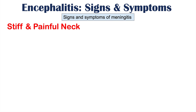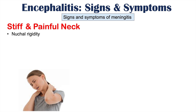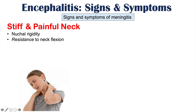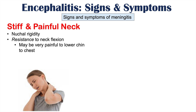One sign that occurs if the meninges are involved is stiff and painful neck, also known as nuchal rigidity — a resistance to neck flexion. If the clinician tries to passively flex the patient's neck, it becomes very difficult. The brain and spinal cord are both surrounded by meninges, and if inflamed, any bending motion irritates the meninges, causing resistance. It may be very painful or impossible to lower the chin to the chest.